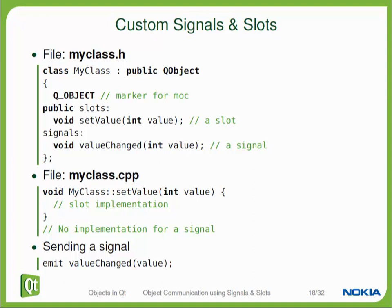To implement a slot, you actually have to implement the member function — in this case, you need to implement the setValue function, which is the function that will be called when your slot is invoked. For a signal, you don't really have to implement anything because the code for the signal is generated automatically by the meta object compiler. The only thing you need to do to emit a signal is write the line: emit signalName(parameters). The code for the signal will be generated.